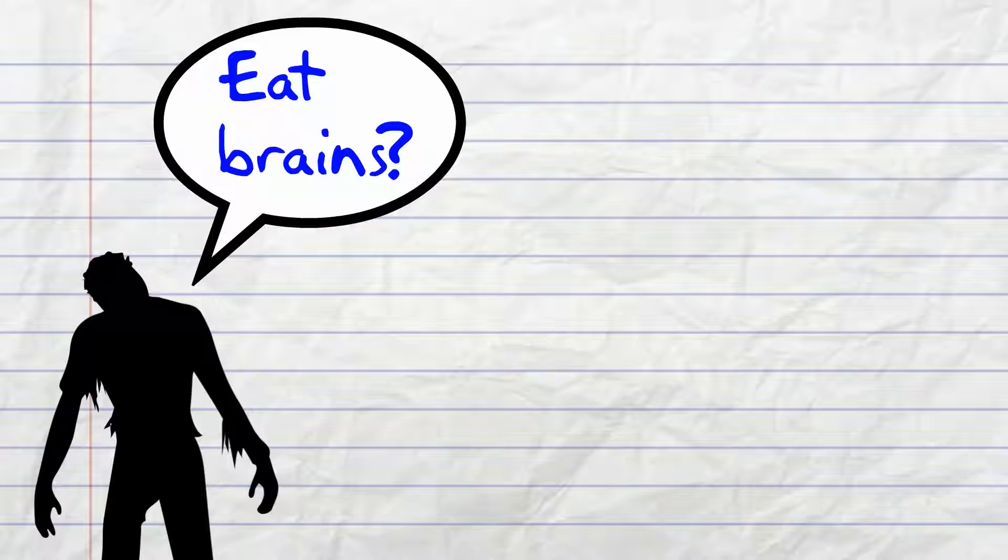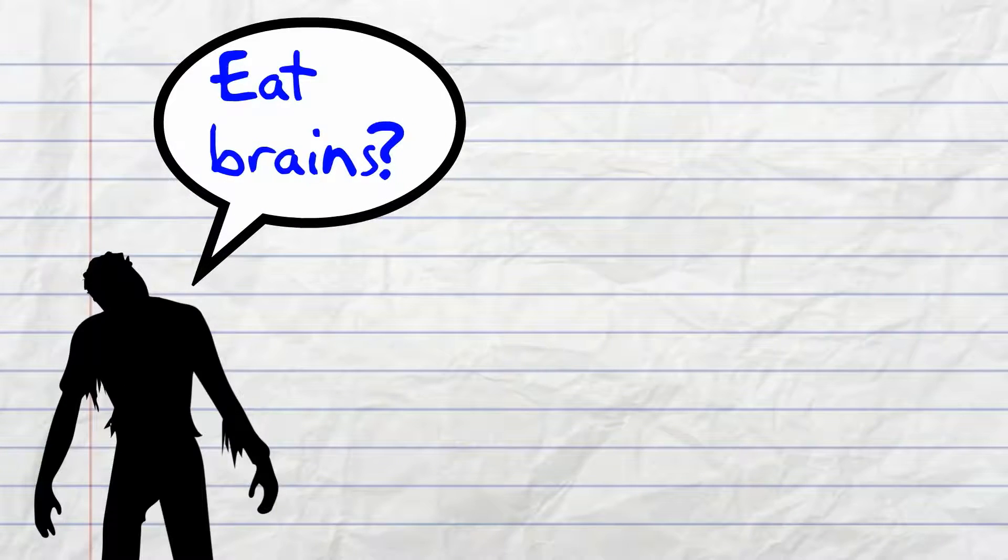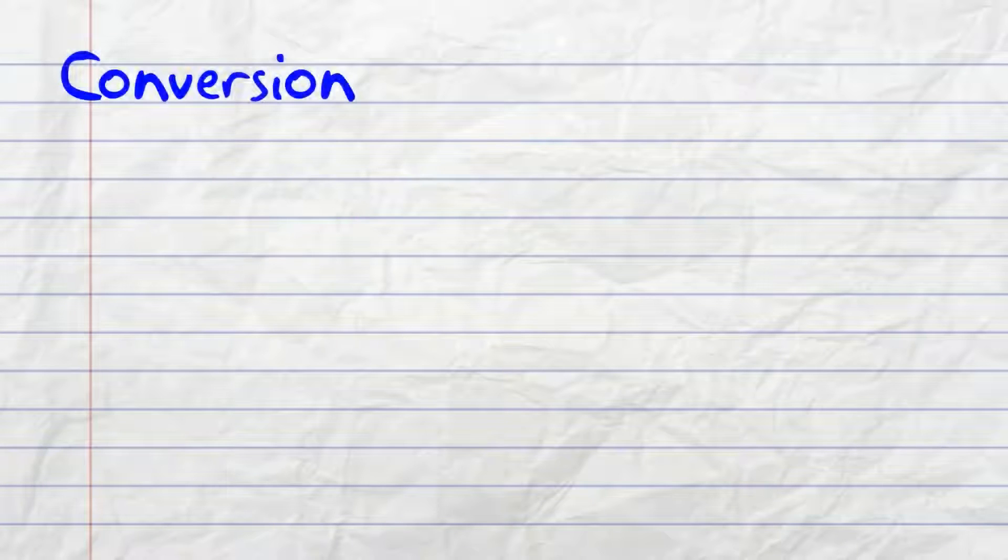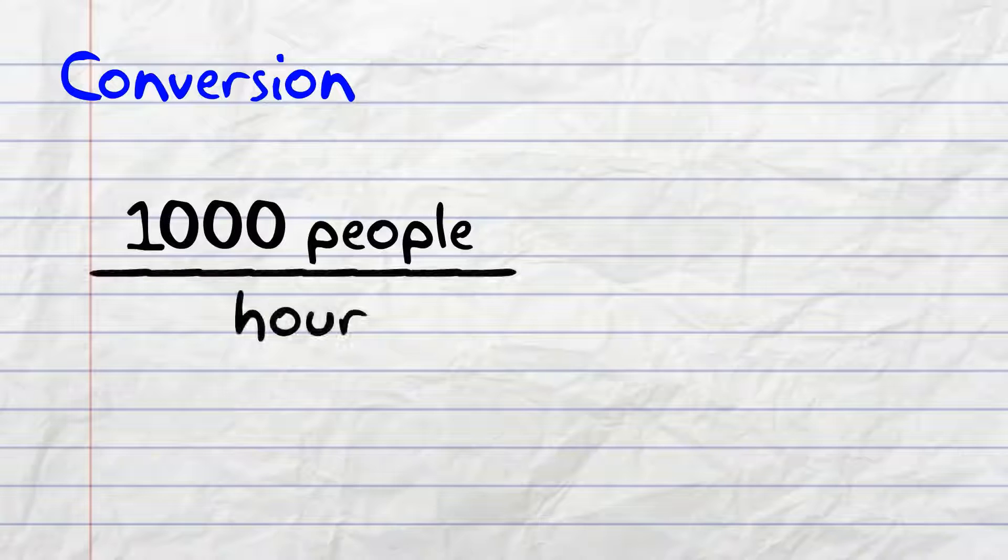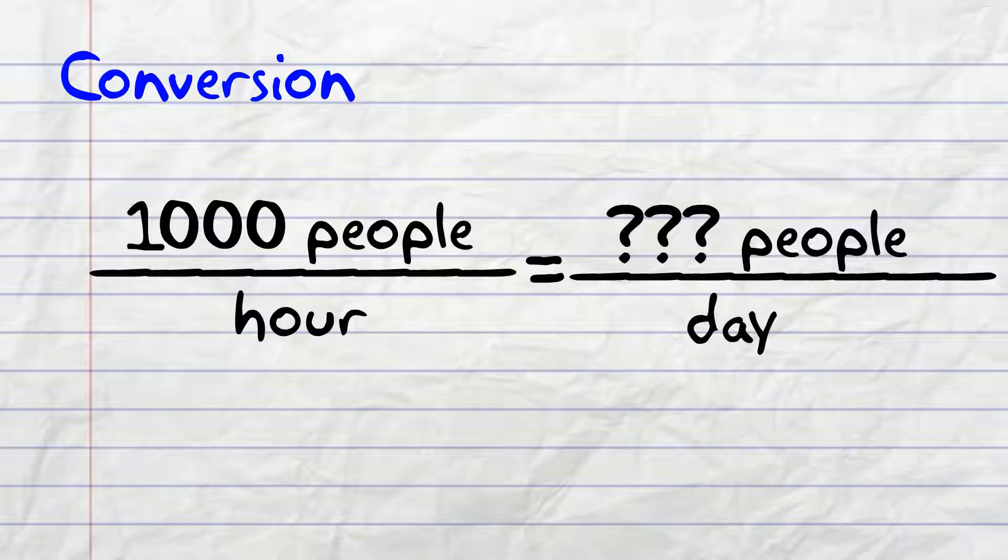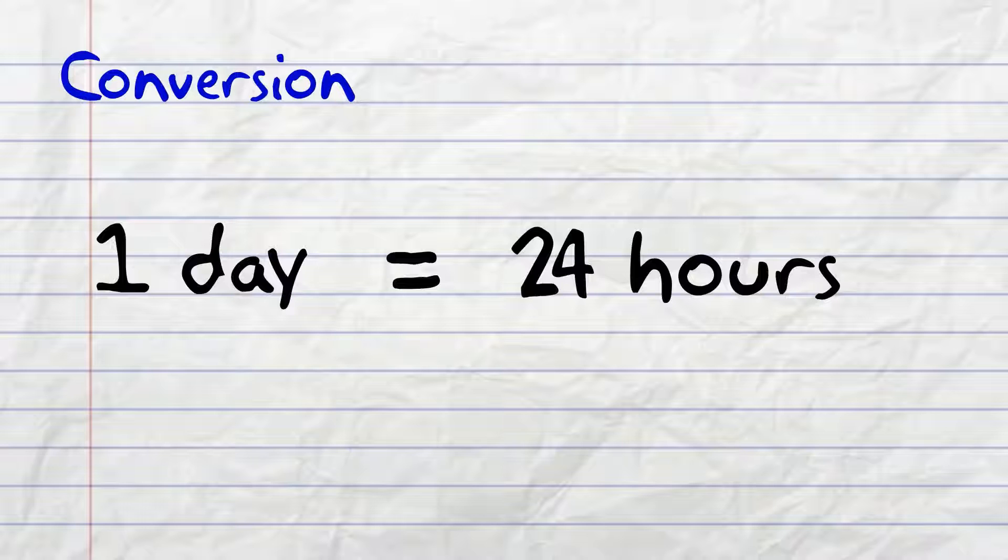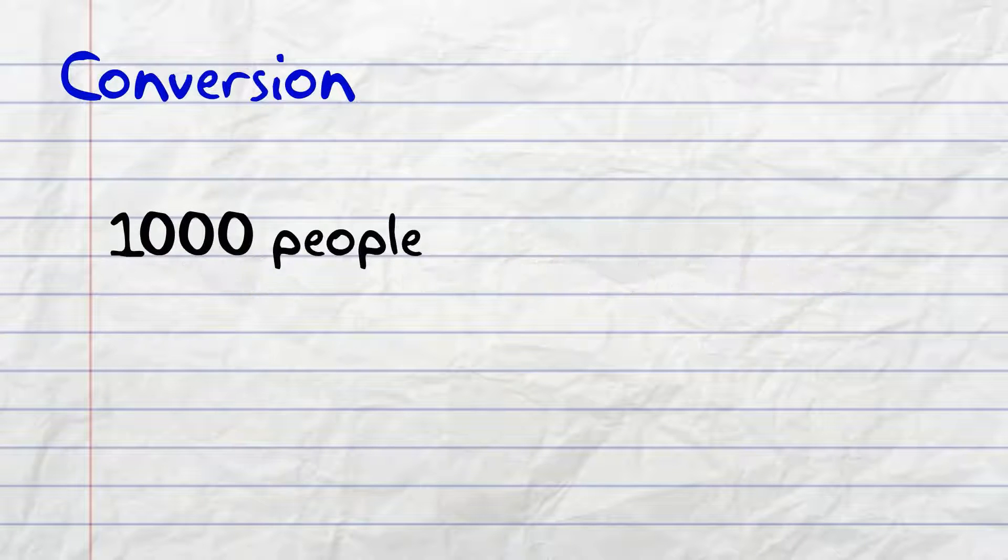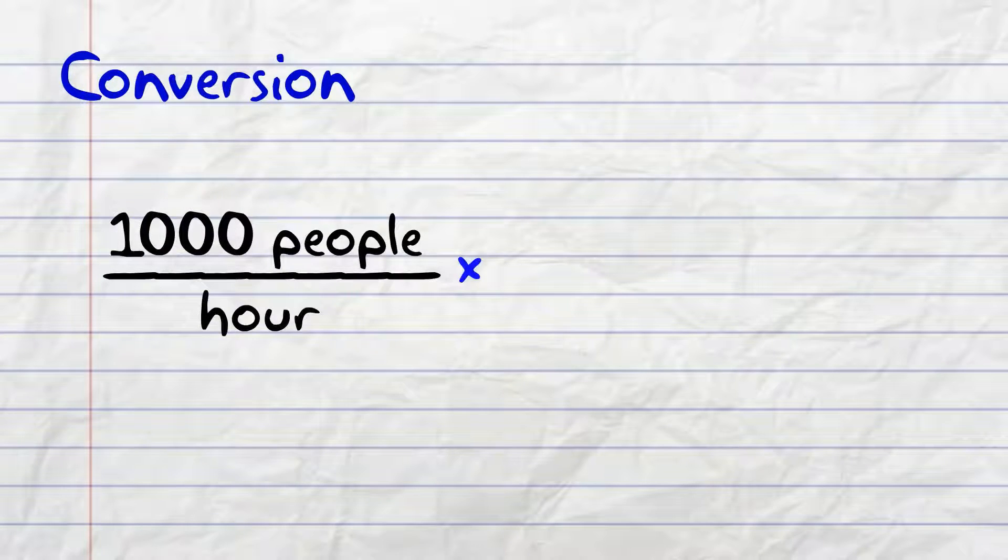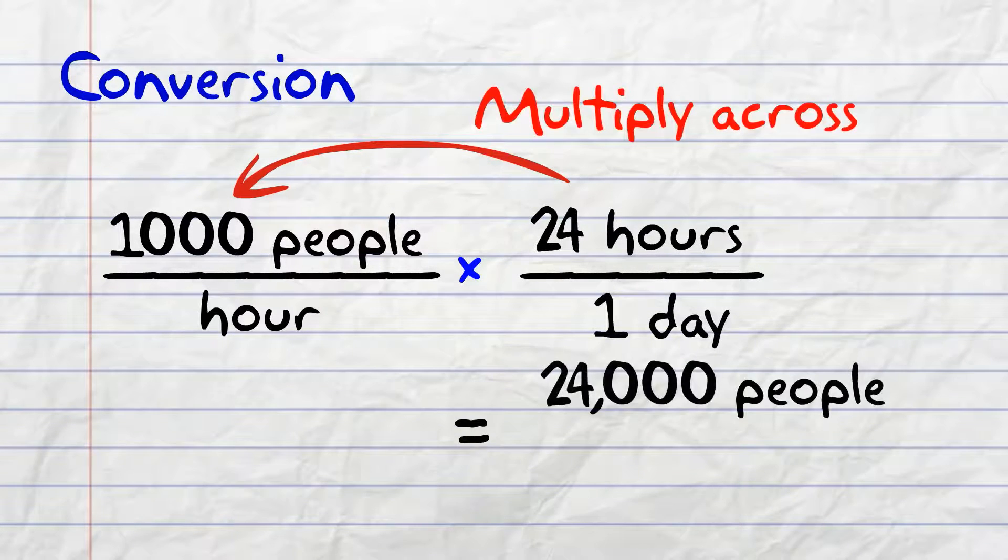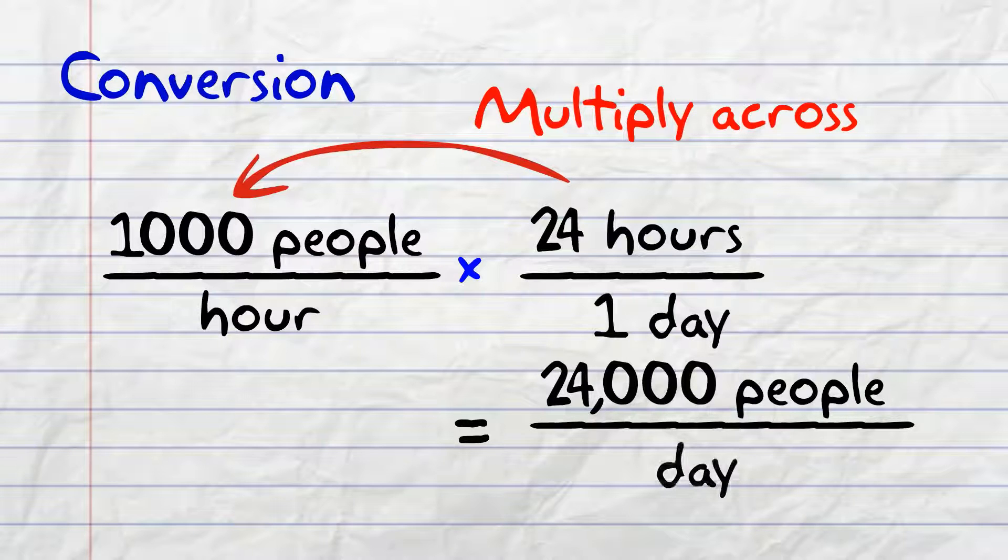No, not yet. Let's answer the question first. Since we're being asked to determine the number of days it will take, we should convert our rate of 1,000 people per hour to a certain number of people per day. We do this by using a conversion. One day equals 24 hours. If we multiply 1,000 people per hour by 24 hours per one day, we can reduce this and get 24,000 people per day.